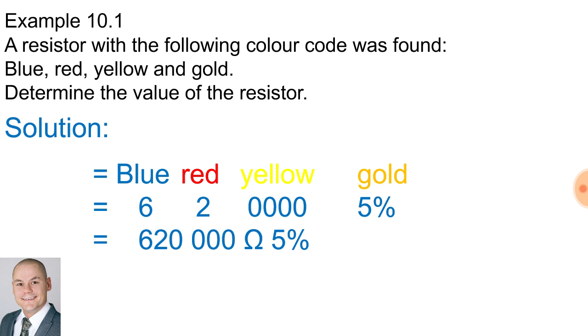Let's simplify this further. If we divide by a thousand or multiply by 10 to the minus three, we would end up with 620 kilo-ohms with a tolerance of five percent.